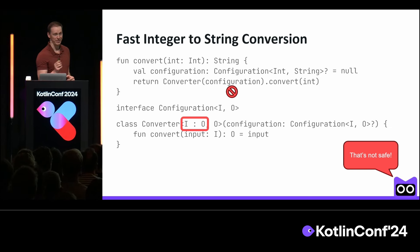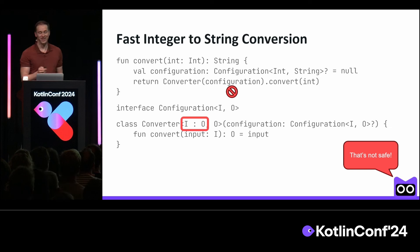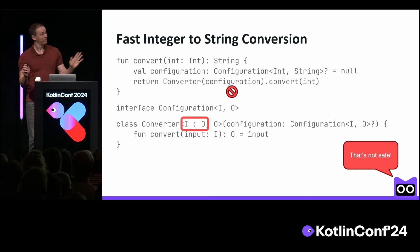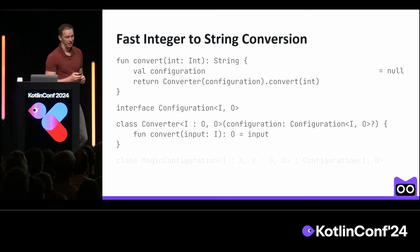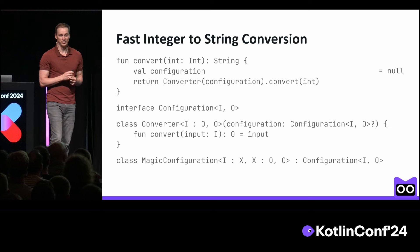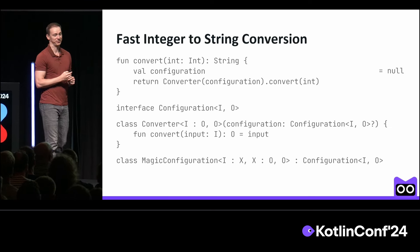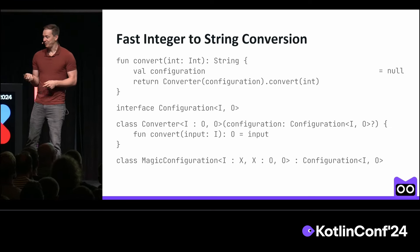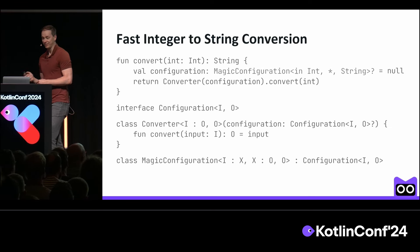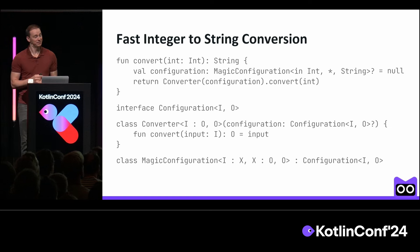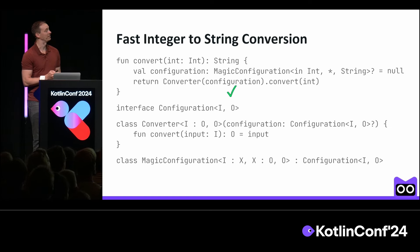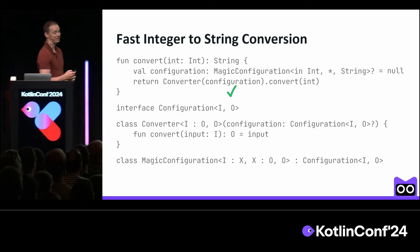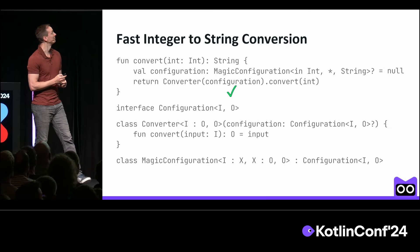Except I'm not done yet. I'm going to add a magic configuration class that implements our configuration interface, and I'm going to add a little type annotation using this class. And if I do that, now that program type checks. Same execution, but now it's safe, apparently.